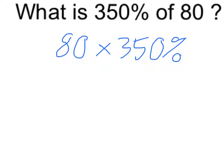Really this is asking you to multiply 80 times 350%. One way we can approach that, a pretty standard way, is if we convert 350% into a decimal, this becomes 80 times 3.5.